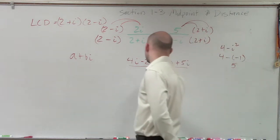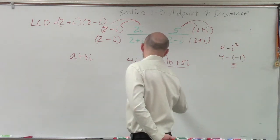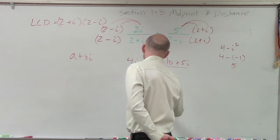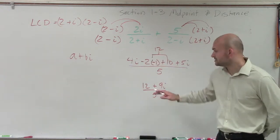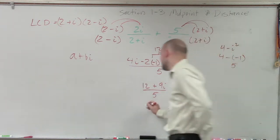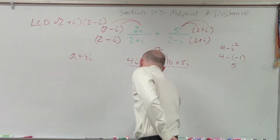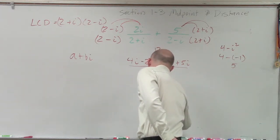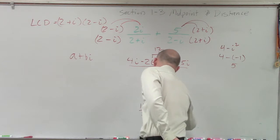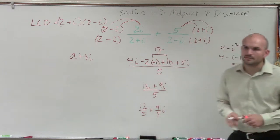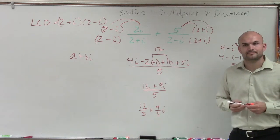So therefore, I'll have 12 plus 9i divided by 5. And again, to continue this in our a plus bi format, we divide 12 divided by 5, plus 9 divided by 5, i. And that's your final answer.